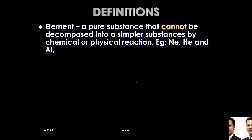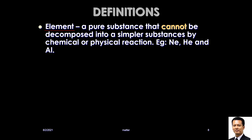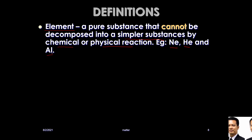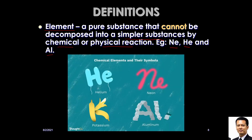Definition of element: a pure substance that cannot be decomposed into a simpler substance, whether you use chemical or physical reaction. For example, neon, helium, and aluminium — you cannot further decompose neon into anything else; it will always remain neon.